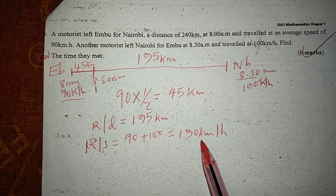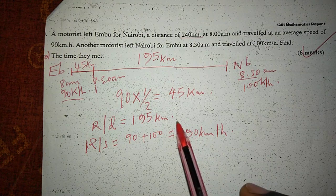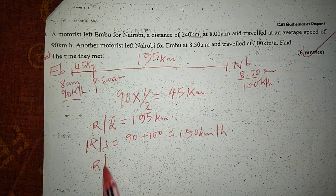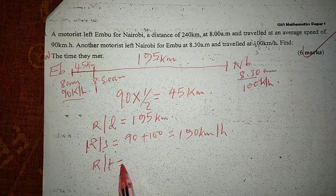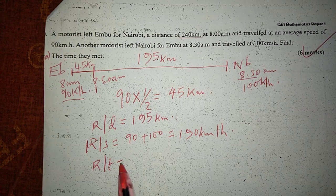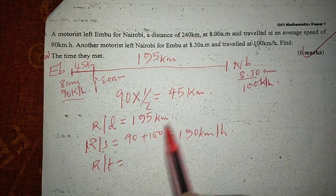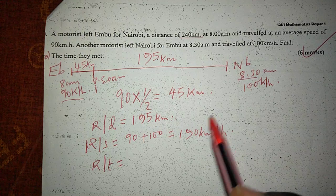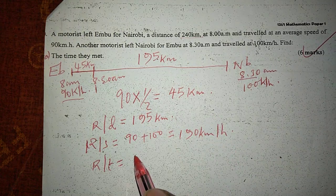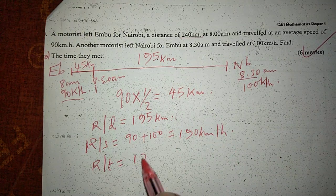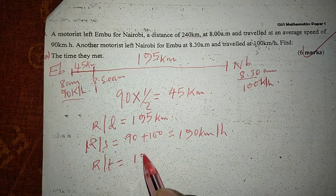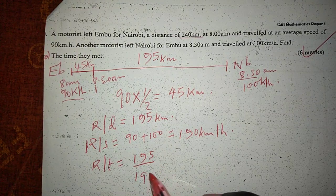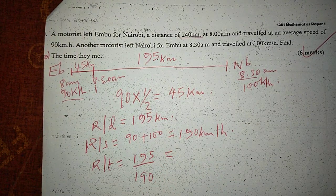With relative speed and relative distance, we can get the relative time — the time taken to cover the relative distance using the relative speed. So this would be relative distance 195 divided by the relative speed of 190.